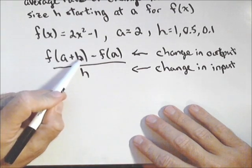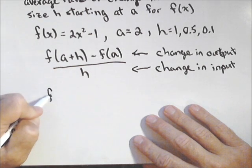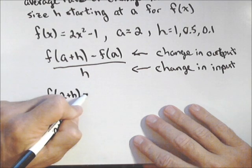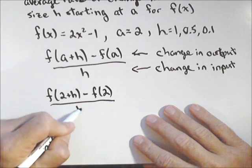So, first off, we have to figure out what f of a plus h looks like. Well, we're using a equals 2, so we have f of 2 plus h minus f of 2 all over h.